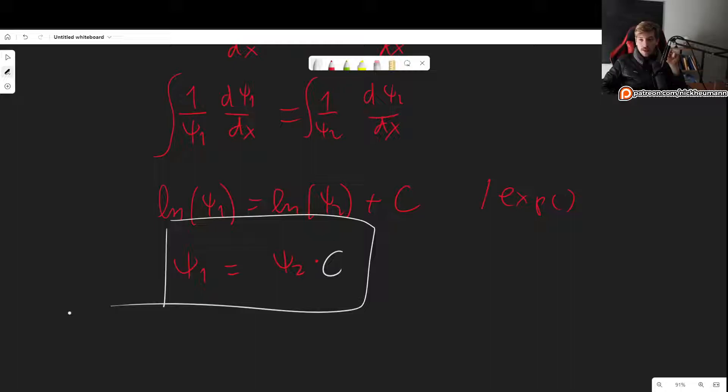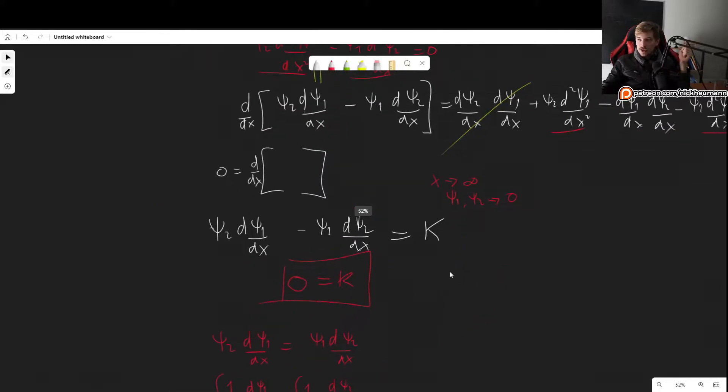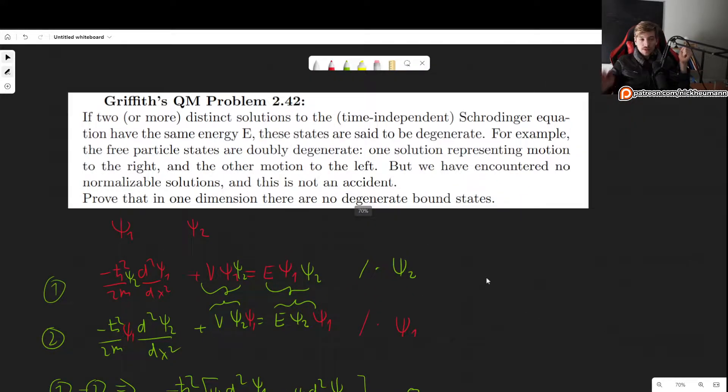So this means that if we have a one-dimensional problem where we have two states with the same energy, then we have just proven that if they are normalizable (super important, only if they are normalizable and have the same energy), then those states are actually the same. One is a constant factor of the other. One is like twice or three times or a third or ten times the other, but they are not really independent. It is the same state, but with a different normalization factor. So there we have proven that in one dimension we do not have degenerate bound states.